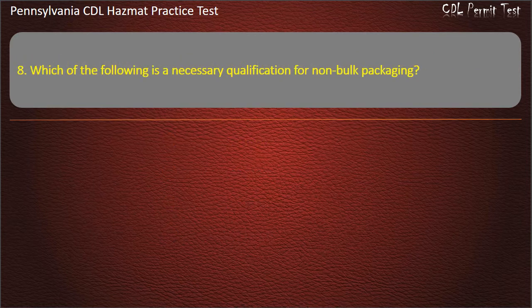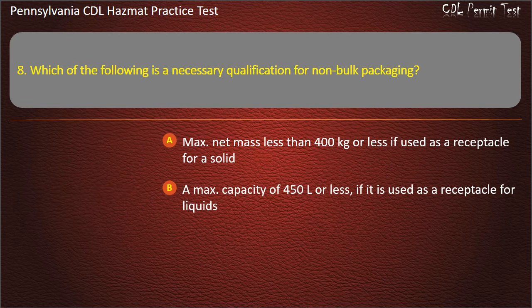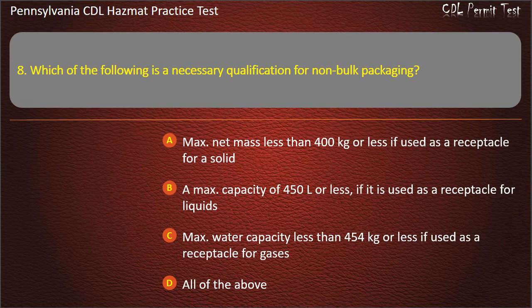Question 8. Which of the following is a necessary qualification for non-bulk packaging? Options: Max net mass less than 400 kg or less if used as a receptacle for a solid; A max capacity of 450 liters or less if used as a receptacle for liquids; Max water capacity less than 454 kg or less if used as a receptacle for gases; All of the above. Answer: All of the above.